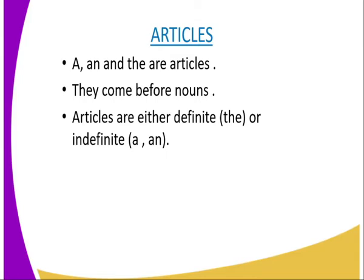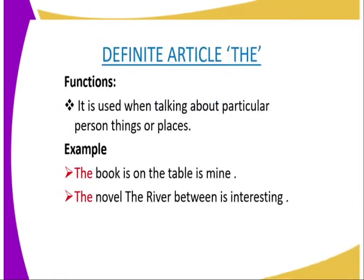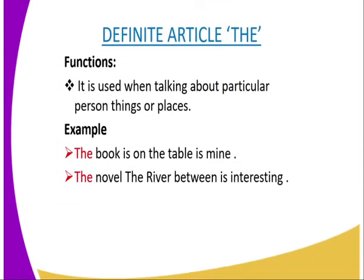If we look at these articles, what we notice is that they come before nouns. An article can either be definite or indefinite. The definite article is 'the', while the indefinite articles are 'a' and 'an'. So we are going to begin with the definite article 'the'.